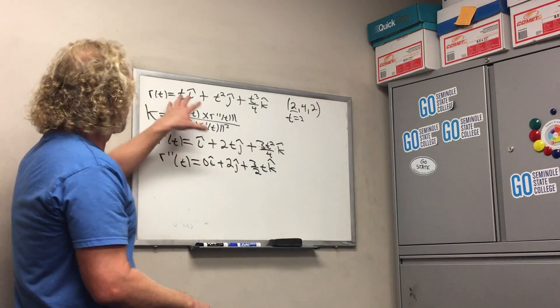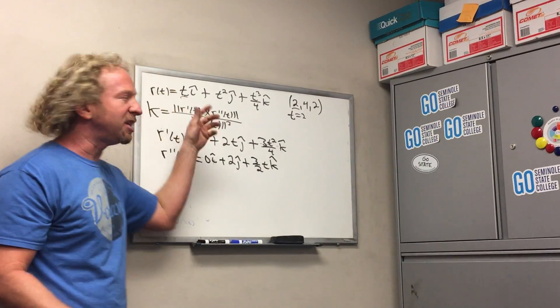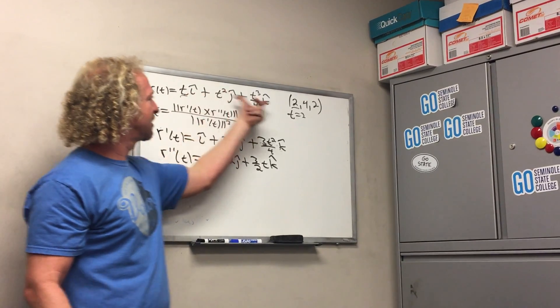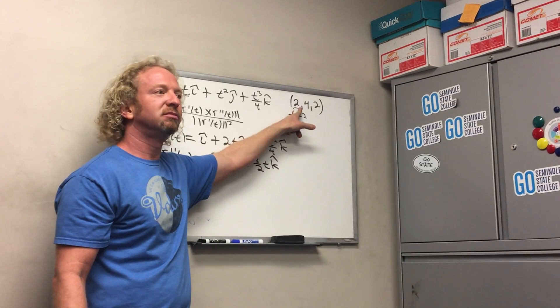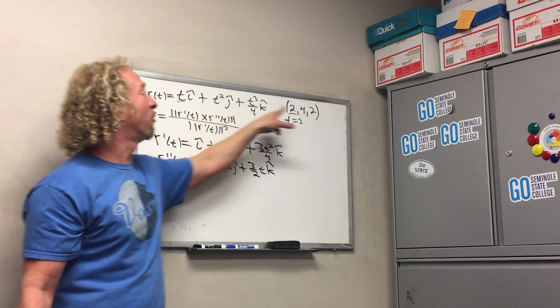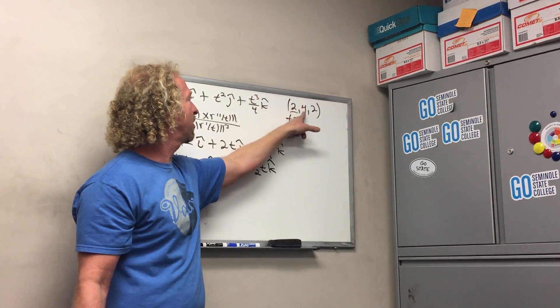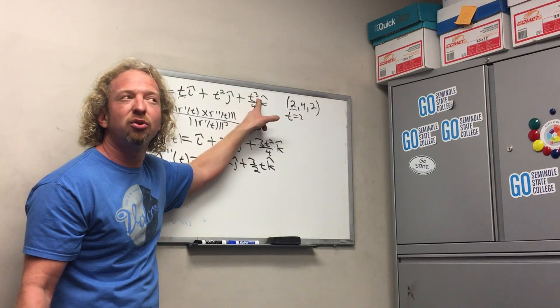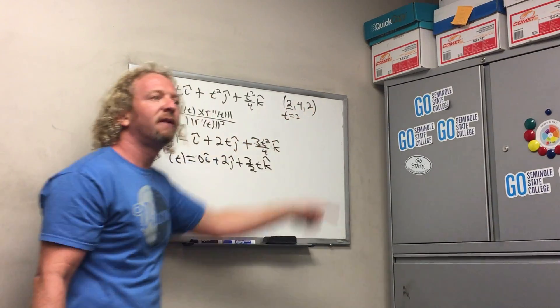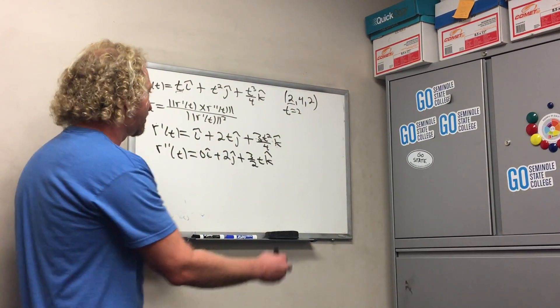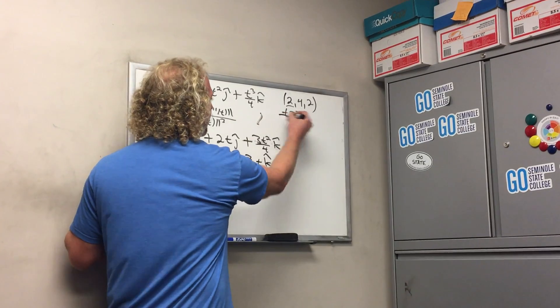Does that make sense? So you have to ask yourself, what value of t gives you 2, 4, 2? So t has to be 2. This has to be 4, right? 2 squared is 4, and then if t is 2, you get 2³ which is 8. 8 over 4 is 2. So by observation, t is 2.